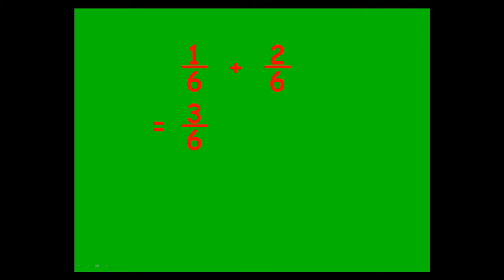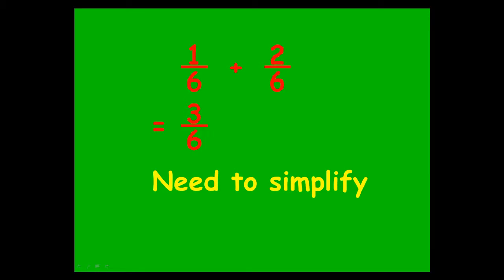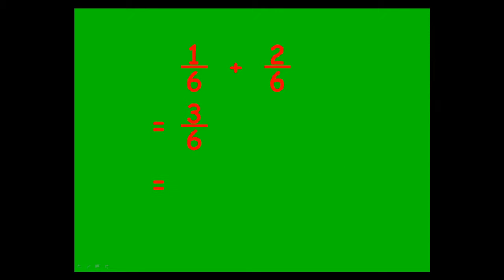One sixth plus two sixths, you end up with three sixths. With any question involving fractions, you always have to make sure that you simplify your answer before you finish. So what goes into three and six? Three does — three ones are three, three twos are six — so you end up with a final answer of one half.